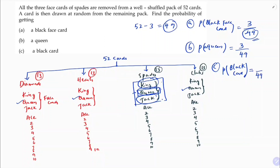Next, probability of getting a black card. Total cards are 49. Number of favorable outcomes: total black cards are 13 + 13 = 26, but 3 cards have been removed from spades, so total black cards remaining = 23. Therefore, probability of a black card = 23/49.